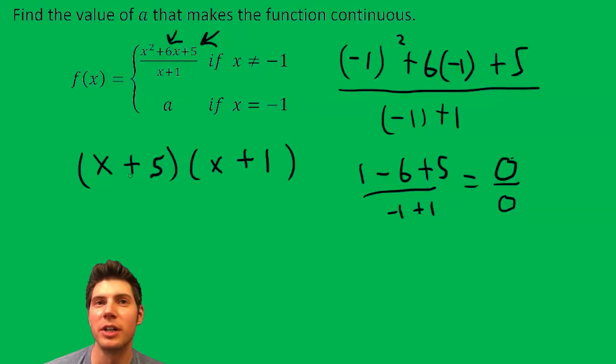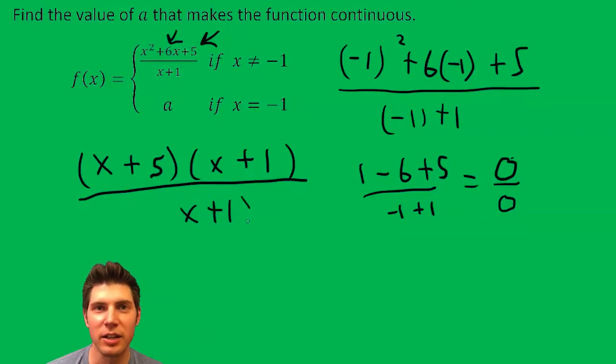So then what we want to do is recognize that this is X plus five, X plus one, and the bottom is X plus one. Now we can cancel the X plus ones.